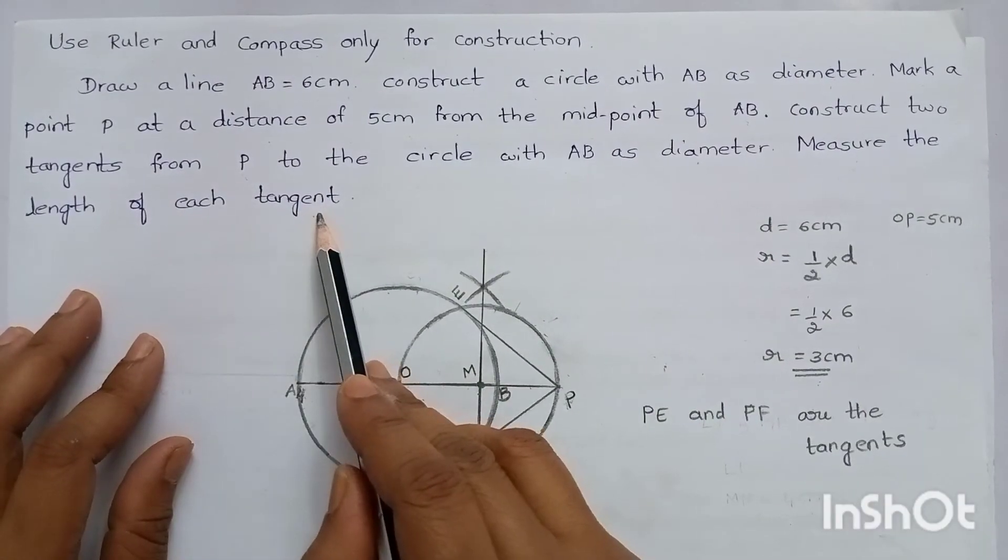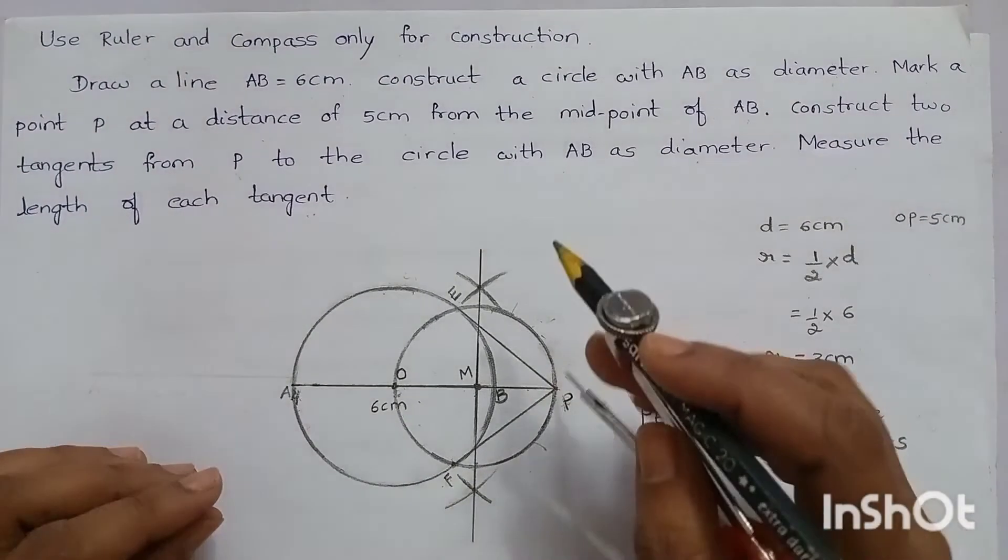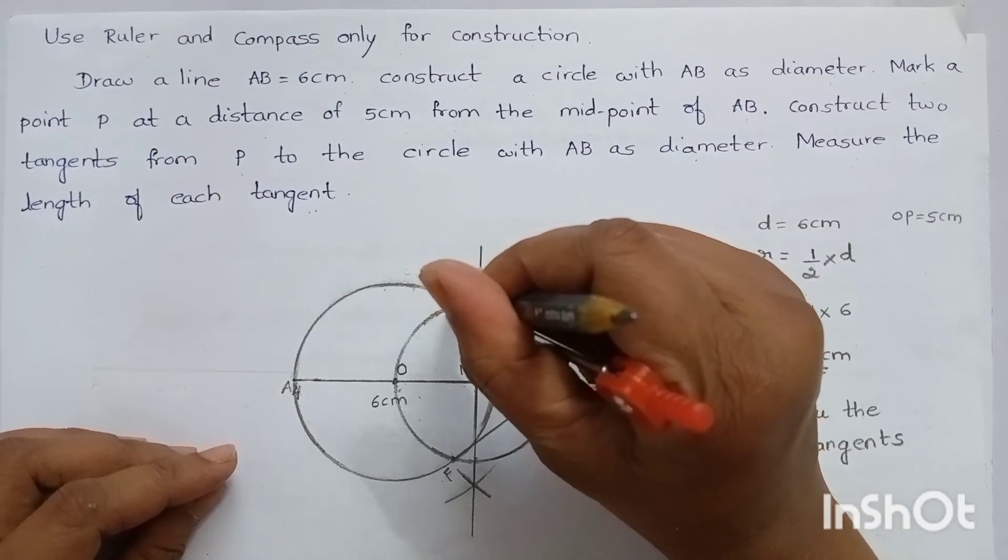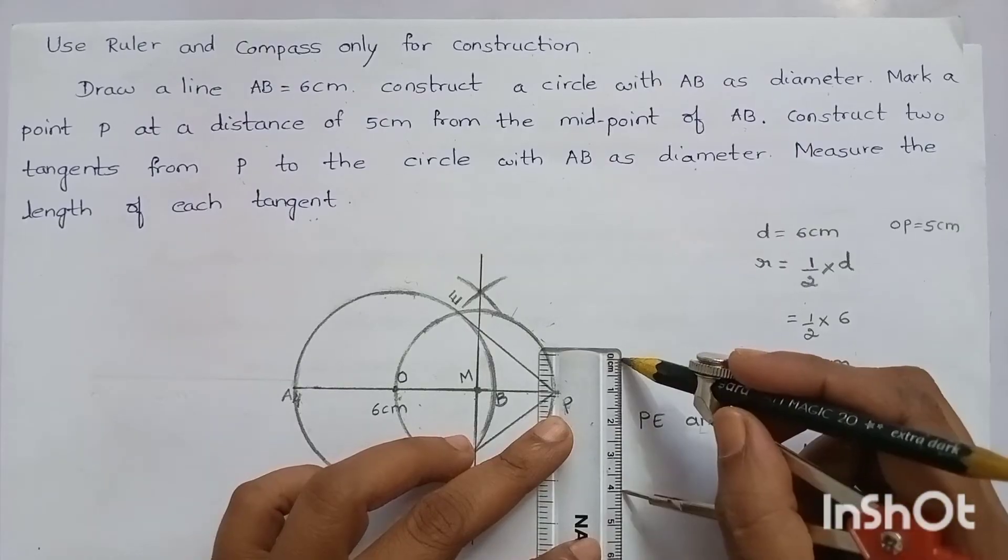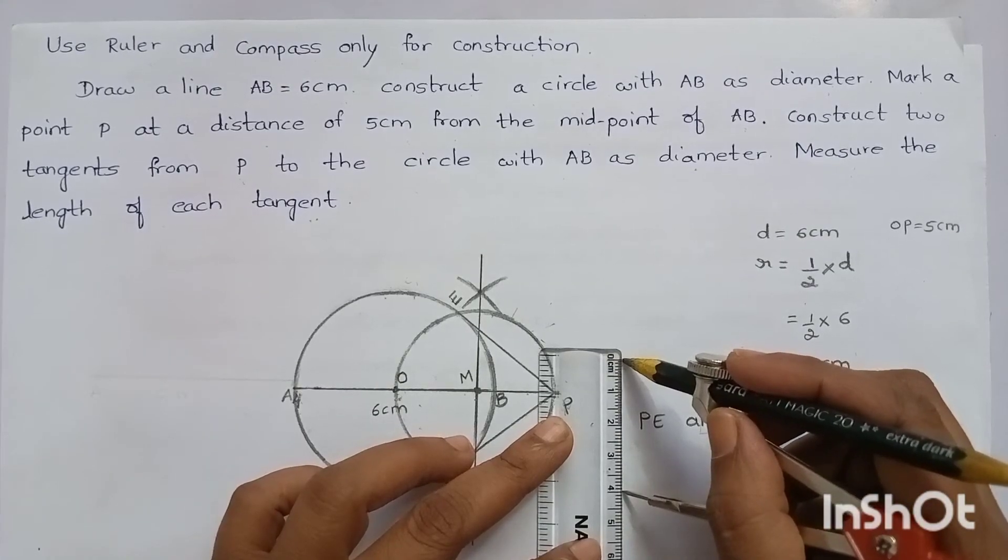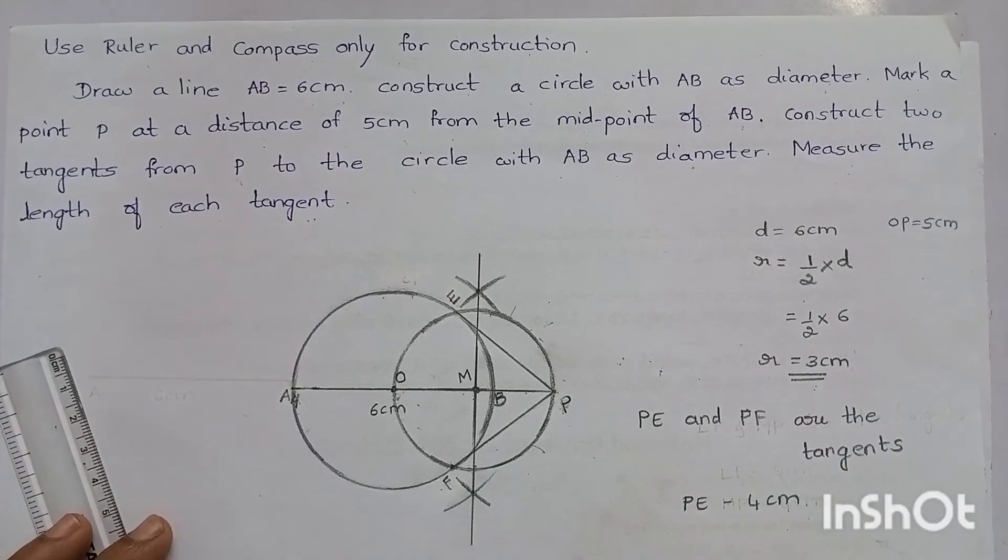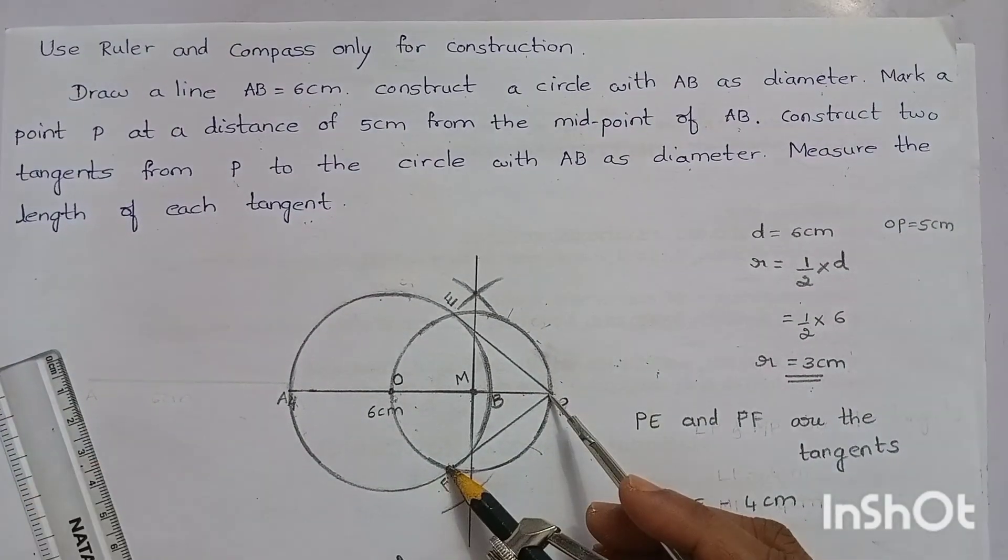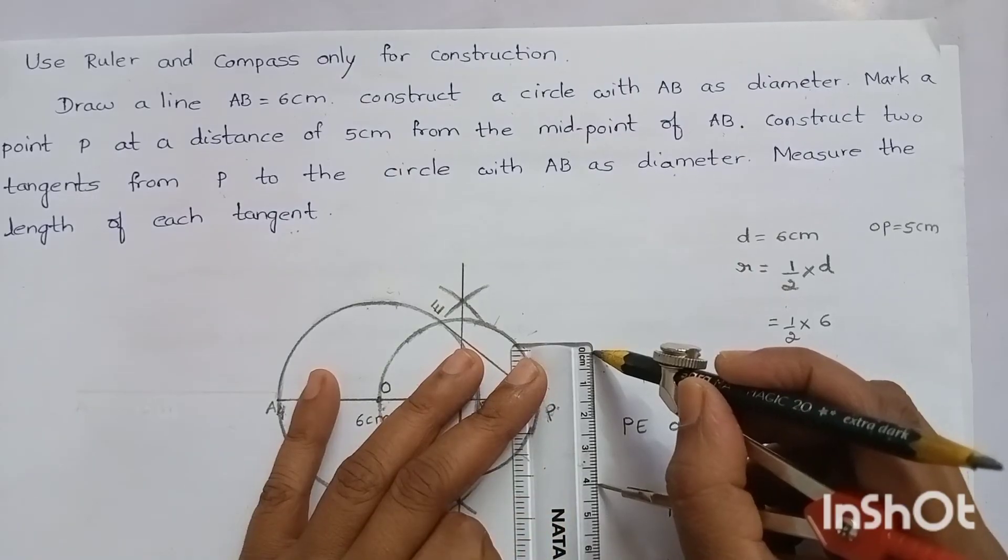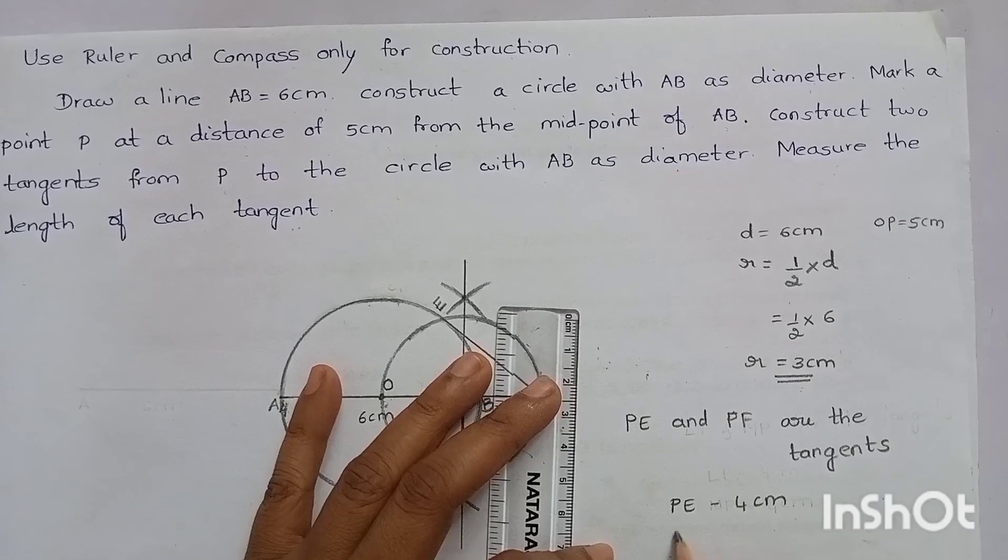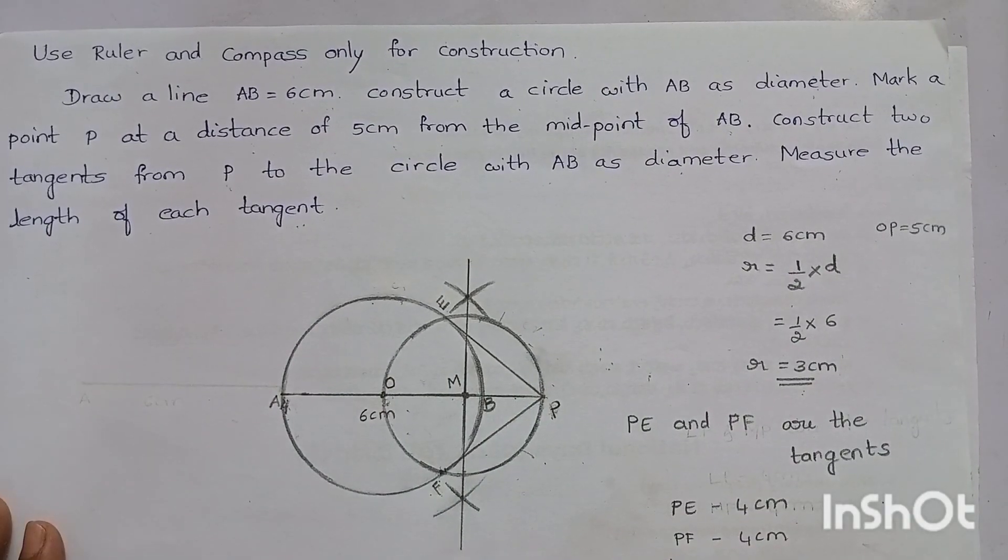Measure the length of each tangent. Now, let's measure the length of the tangents. To measure this, I am taking the help of compass. Now, let's measure this by using the ruler. PE, it measures 4 cm. PE is 4 cm. Now, let's measure PF. Let's measure PF by using the ruler. PF is also 4 cm. PF, it measures 4 cm. Hope you have understood. Thank you.